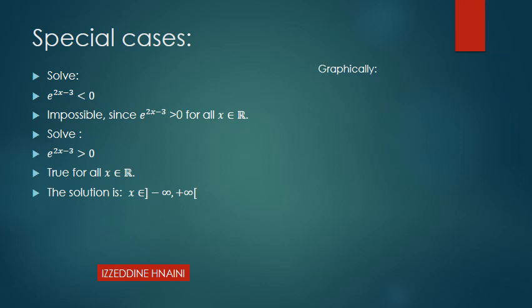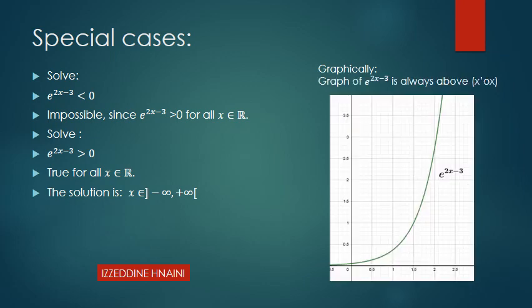Graphically, the graph of e^(x-3) is always above y = 0, which is the x-axis, confirming that e^(x-3) > 0 is always true.